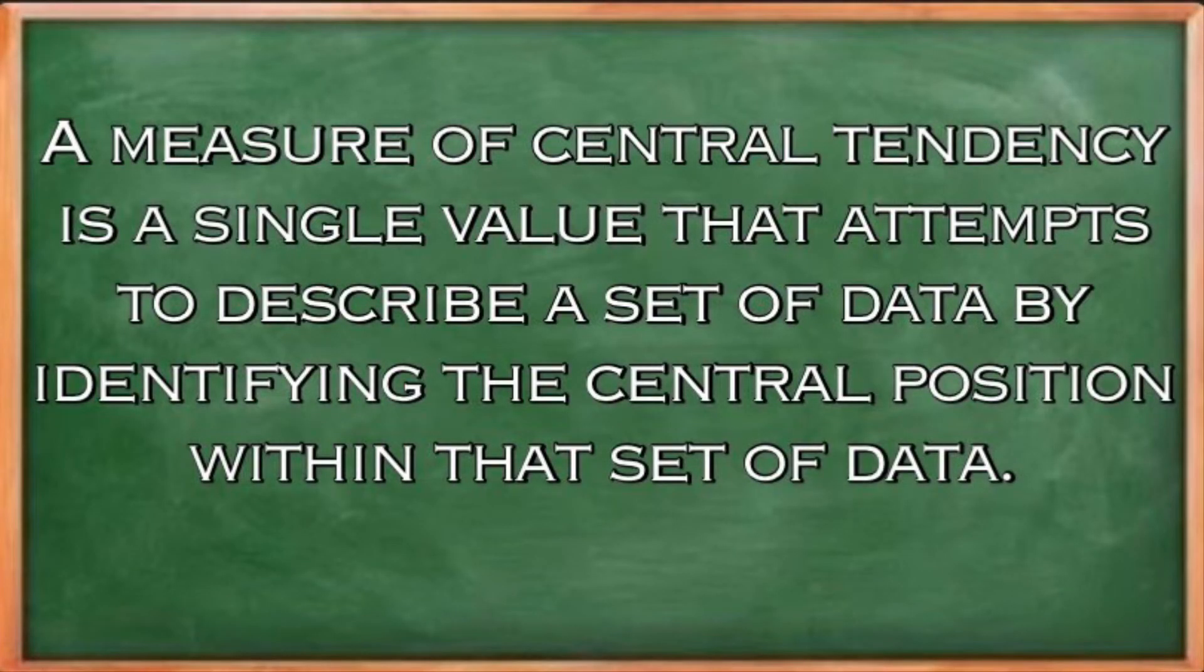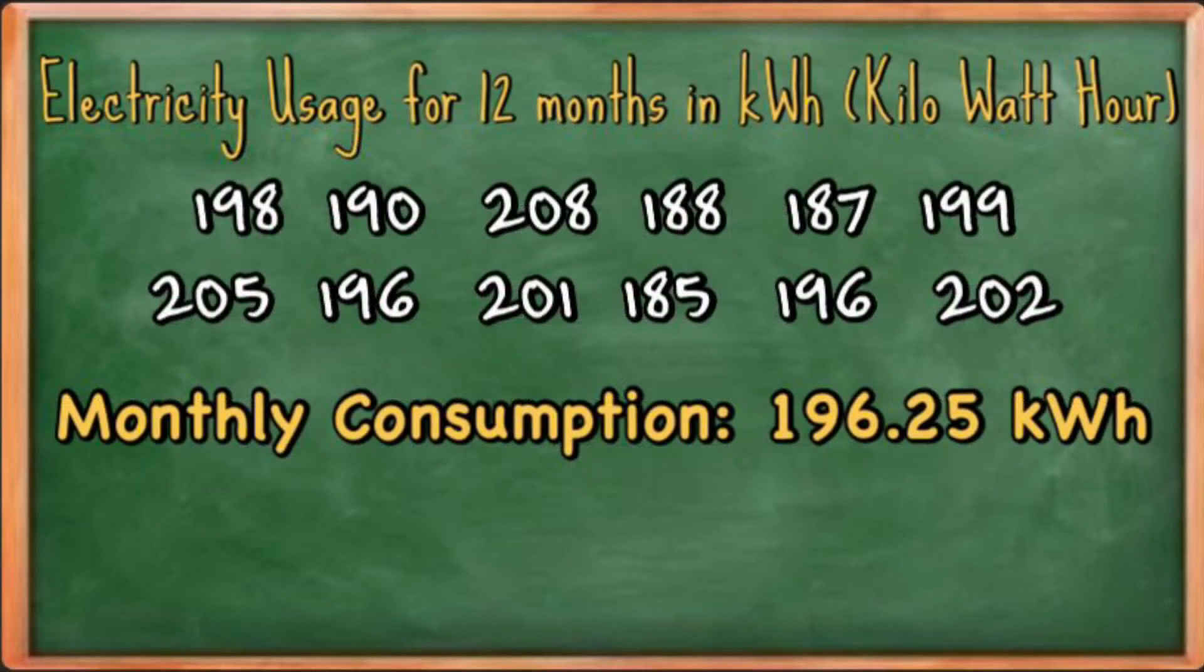Measures of central tendency is a single value that attempts to describe a set of data by identifying the central position within that set of data. For example, what if someone will ask you about your monthly electricity consumption? And the data shown are your electricity usage for the past 12 months in kilowatt hour. Instead of stating all these values, you can use the measure of central tendency and just say your monthly consumption is around 196.25 kilowatt hour.